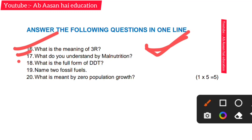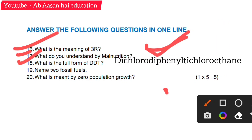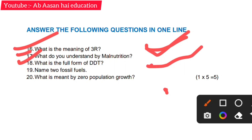What is the full form of DDT? It's a very long form — Dichloro-Diphenyl-Trichloroethane. Also, name some fossil fuels — these include natural gas and oil.